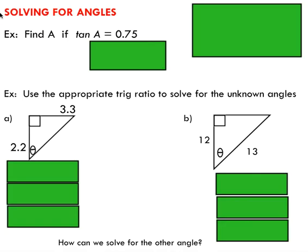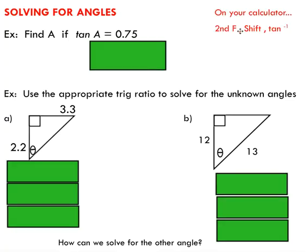As it turns out, we can also solve for unknown angles when we're given two sides in a right triangle. On your calculator, I want you to quickly see if you can find your second function or your shift button. You want to push second function and access this tan inverse for this example here. This example says find A if tan A = 0.75.